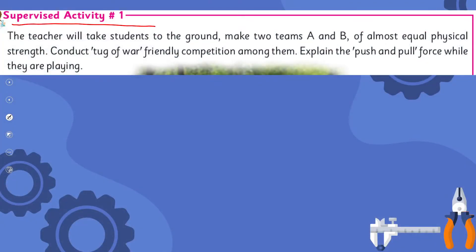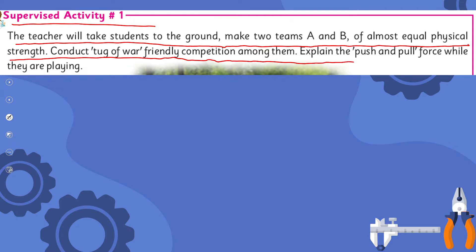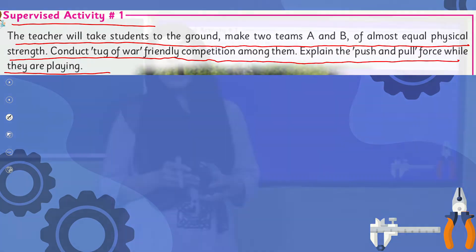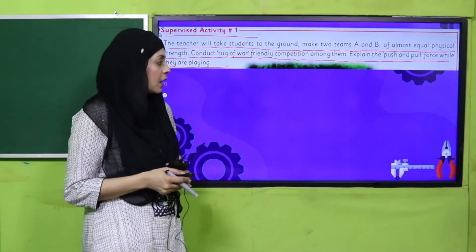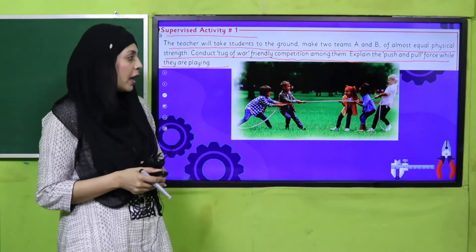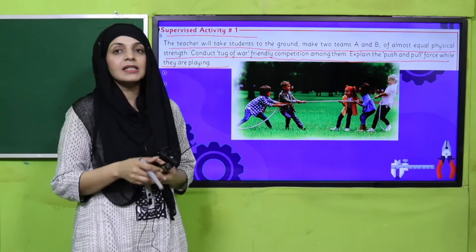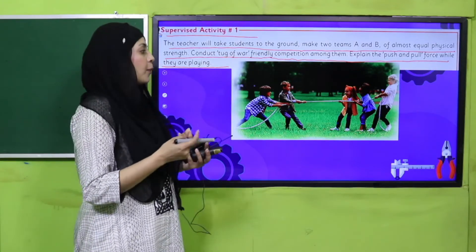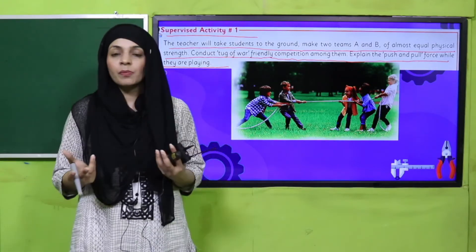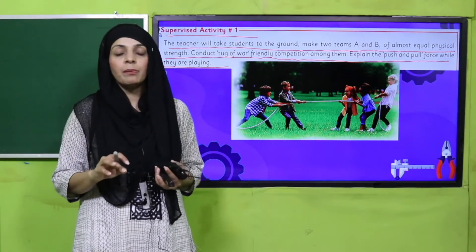Here is a supervised activity. The teacher will take students to the ground, make two teams A and B of almost equal physical strength, and conduct a tug of war — a friendly competition. The teacher will explain the push and pull force while students are applying force. You have to go to the ground with your teacher and play tug of war, also called rassa kashi.